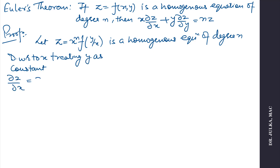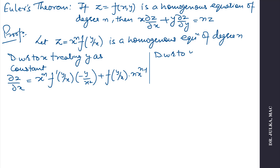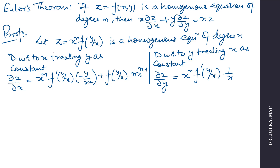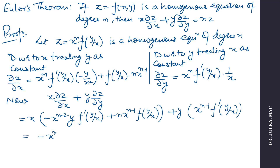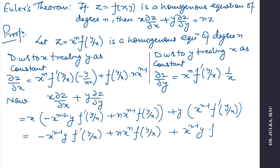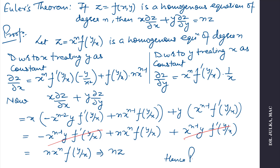So ∂z/∂x equals x^n · f′(y/x) · (−y/x²) + f(y/x) · n·x^(n−1). Now differentiating with respect to y, treating x as constant, we get ∂z/∂y equals x^n · f′(y/x) · (1/x). Now substituting into x·(∂z/∂x) + y·(∂z/∂y) and simplifying, the terms −x^(n−1)·y·f′(y/x) and +x^(n−1)·y·f′(y/x) cancel, leaving n·x^n·f(y/x), which equals nz. Hence proved.